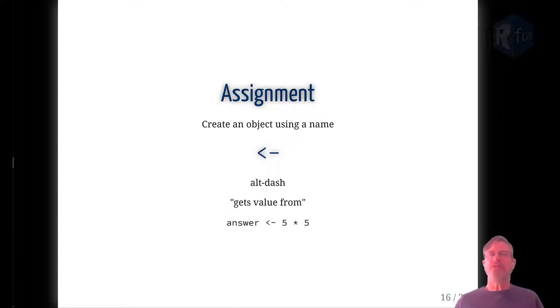An assignment is simply a way to fix the value of a function to an object name. An assignment operator looks just like this. It's a less than symbol followed by a dash. In order to create that, you just type alt dash on your keyboard. You can think of that as saying gets value from.